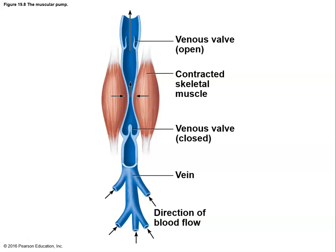Venous valves work just like heart valves — ensuring blood goes forward and doesn't come back. As the heart beats, blood moves forward through a valve; when the heart relaxes, gravity tries to pull the blood back down, but the valve closes and stops it. The next heartbeat pushes it forward to the next valve. So blood moves forward, stops, forward, stops — which is far better than moving forward and then backward.